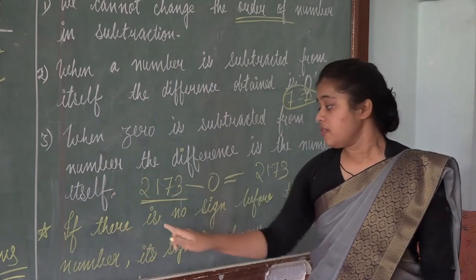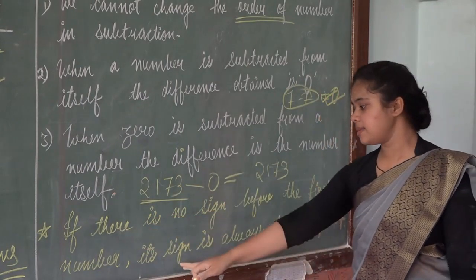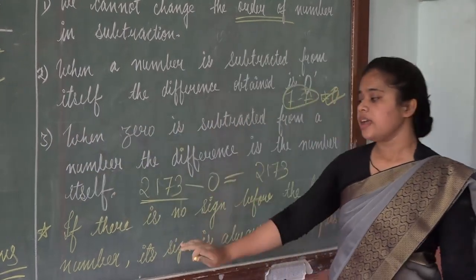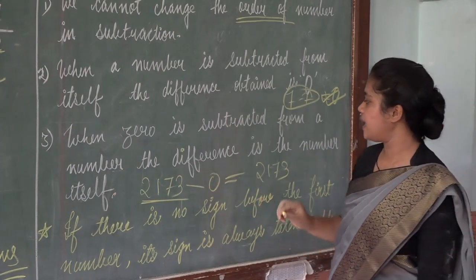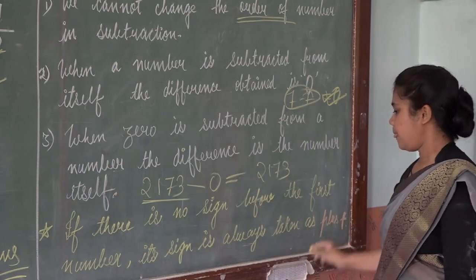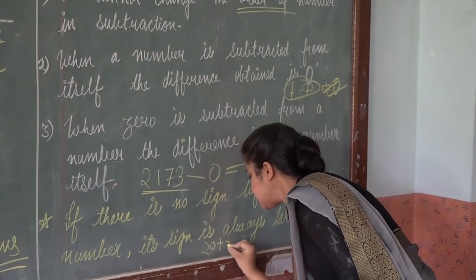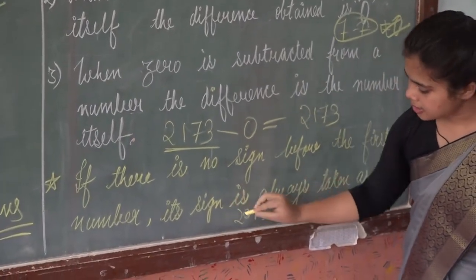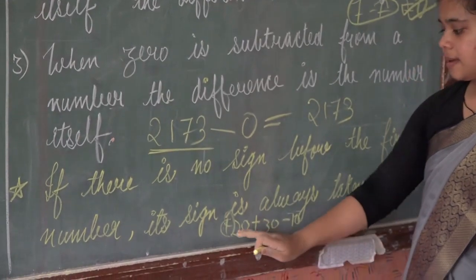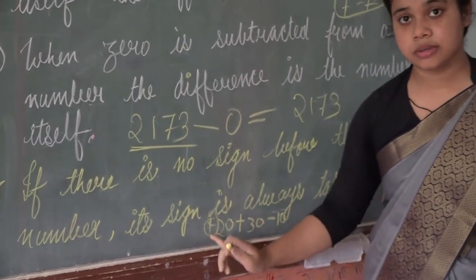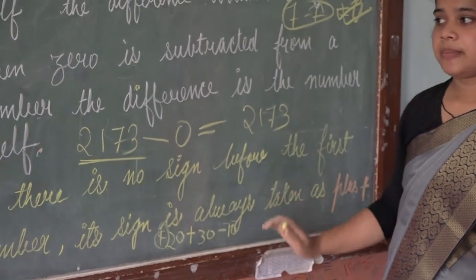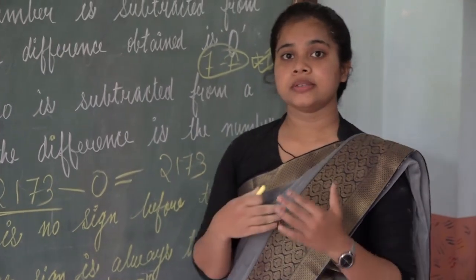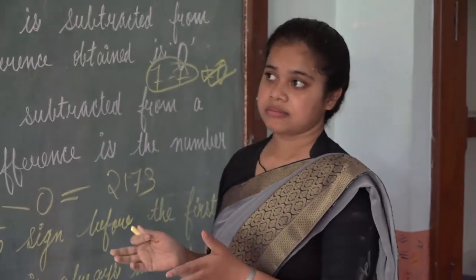If there is no sign before the first number, its sign is always taken as plus. For example, if I write 20 plus 30 minus 10 — there is no sign before 20, which means it is plus. I hope these were the few important points on the topic of subtraction.